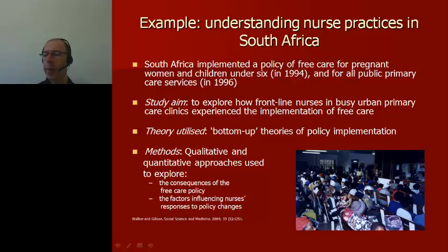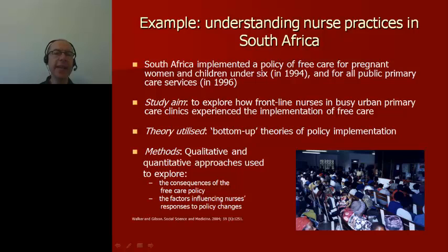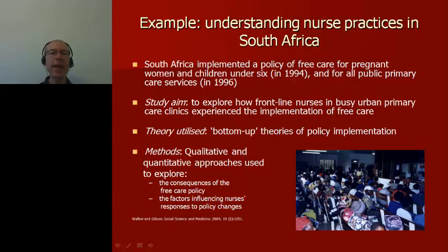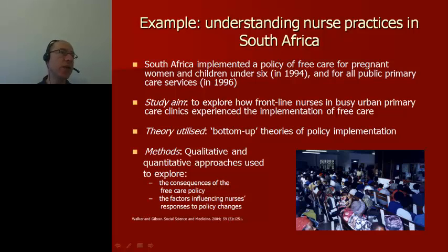This is another study conducted in South Africa. As some of you will recall, South Africa implemented a policy of free care for pregnant women and children under six in 1994, and then in 1996 the policy was extended to include all primary healthcare services. The aim of this study was to explore how frontline nurses in busy urban primary healthcare clinics experienced the implementation of this free care policy. The study drew on so-called bottom-up theories of policy implementation, which suggest that frontline providers such as nurses or doctors must have discretion in taking decisions that allow them to respond effectively to the different needs of patients.